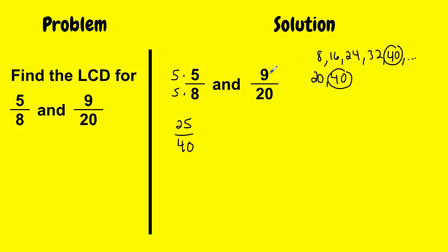And then when I look at this fraction to change my denominator of 20 into a 40, the multiple is 2, so 20 times 2. And I do the same to my numerator. So 9 times 2 is 18 over 40.